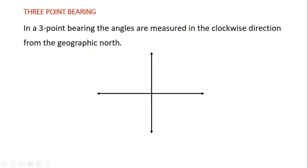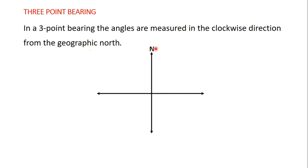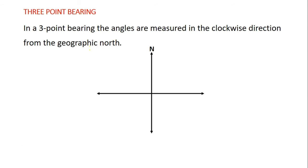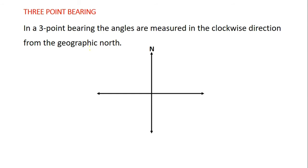When we draw our diagram, this point here is the geographic north. The angles are always measured from the north and they are always measured in the clockwise direction. So for three-point bearings, we will always measure the angles clockwise from the north.